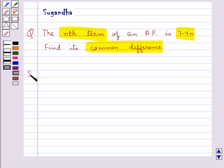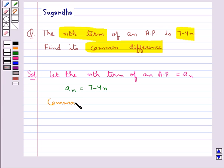Let's move on to the solution for this question. Let the nth term of an AP be equal to an, and from the question we have that an is equal to 7 minus 4n. Then we have the common difference